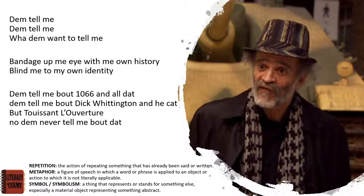'Bandage up me eye with me own history. Blind me to my own identity.' There's some really powerful imagery here. The word 'bandage' we might usually associate with healing and making people better, but in this context it's used quite aggressively — it's about the British denying the narrator vision, putting this person in the dark from their own history. So British colonial education becomes the oppressor, deliberately blinding colonised people to their own history, and therefore to their own sense of identity. That's what makes him really angry — we're straight into the frustration with that image.